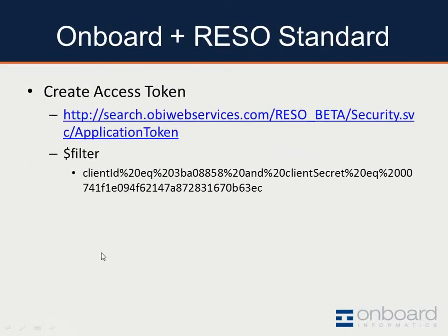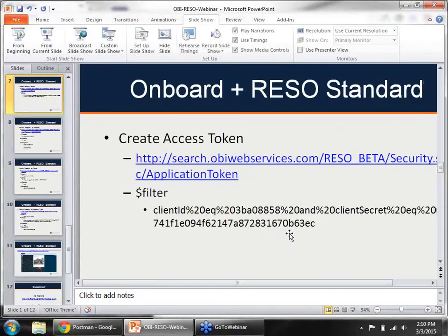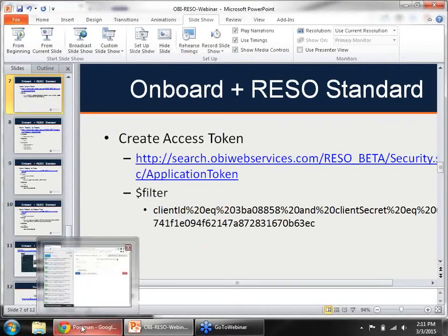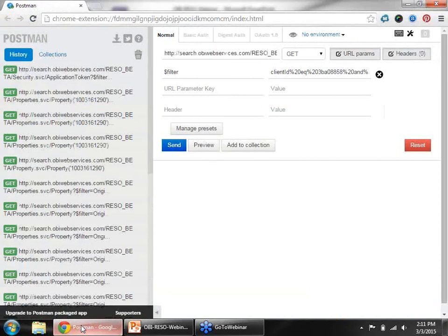Let me walk you through a little bit of the beta API that we've already put together. Just like the last webinar that we did last month, we'll be putting this up on our YouTube channel — you can search either Onboard Informatics or Onboard Data to see that and to see this one as well. When you're interacting with one of these APIs, you're going to want to use a client to make life a little bit easier. I'll be using Postman. You can also use something like SOAP UI, and I'll put links to those in the YouTube description.